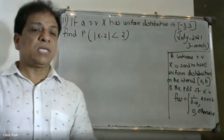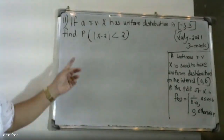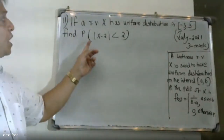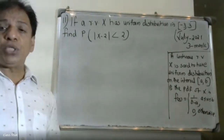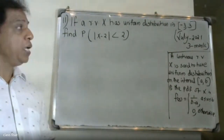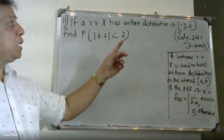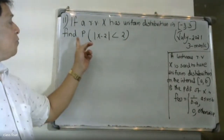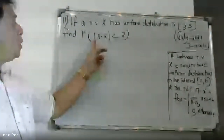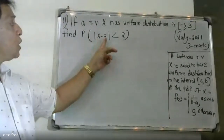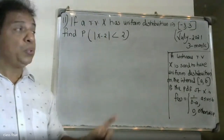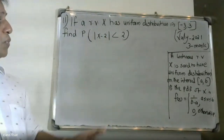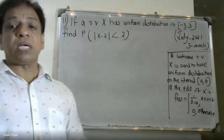Good morning friends. University question: if a random variable X has uniform distribution on minus 3 to 3, find the probability of |X minus 2| less than 2.